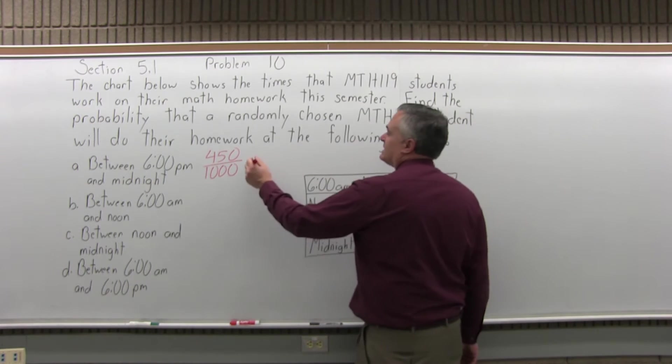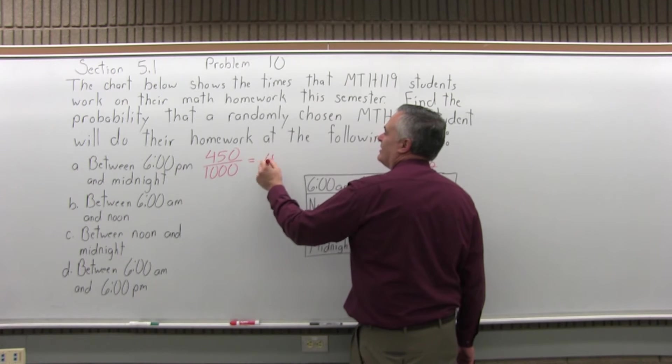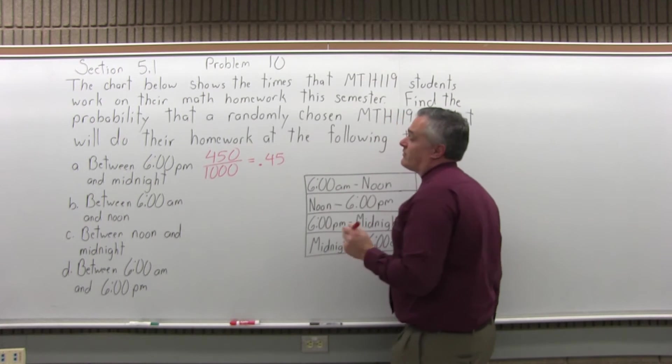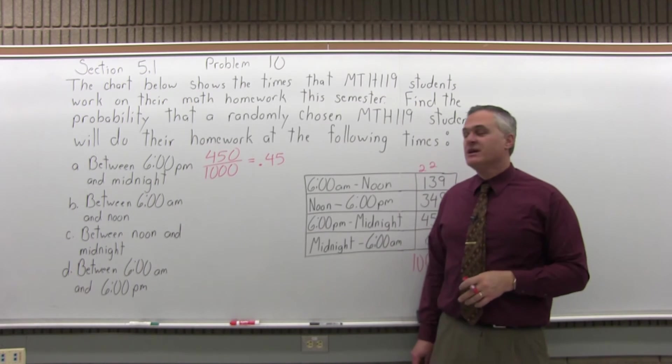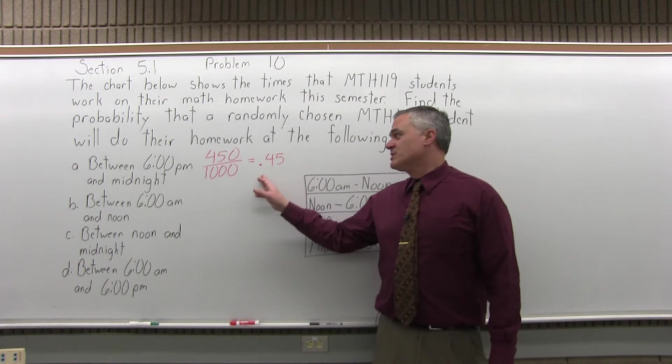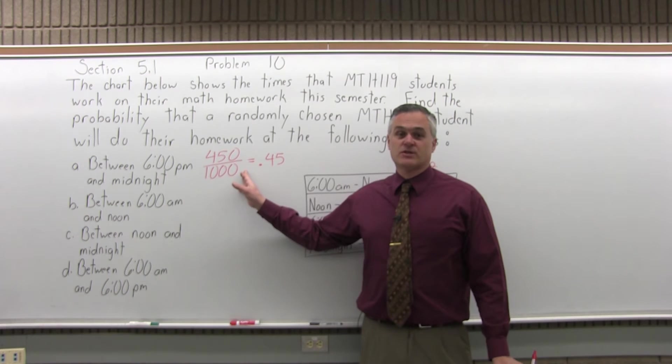This one, it's almost too easy to convert it to a decimal because of the zeros in the denominator. It'd be .45 or 45%. If you like the decimals better, 450 over 1,000 is also perfectly fine.